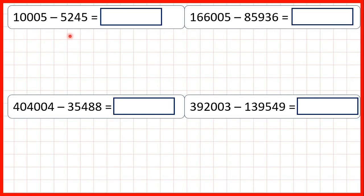We need to subtract using column subtraction, but for these questions we'll need to exchange across zero. That means when we need to exchange and we go to the left, we'll have a zero, so we'll need to go to the left again and exchange more than once.